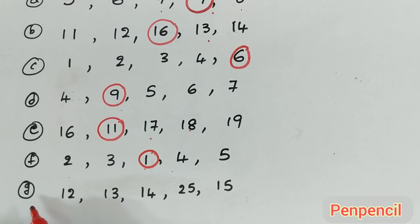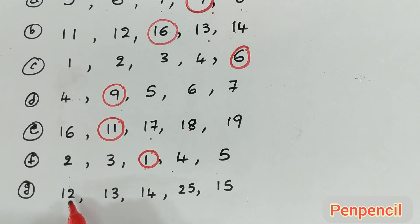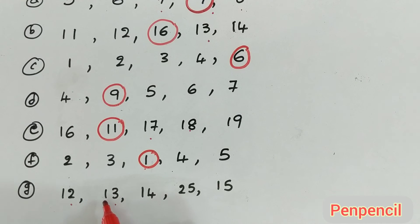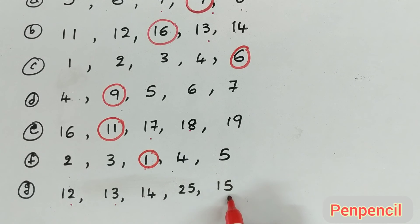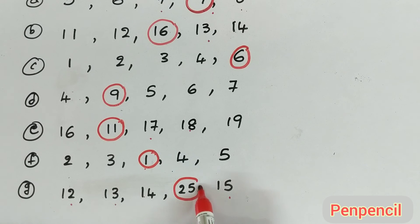Next one. 12 — what is the number after 12? 13. Number after 13? 14. What is the number after 14? 15. So 25 is the wrong number.